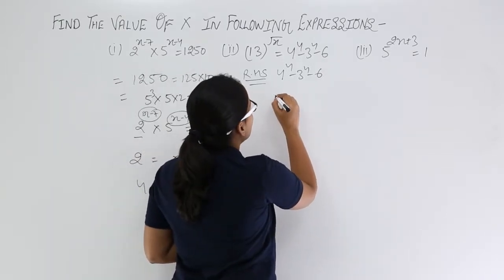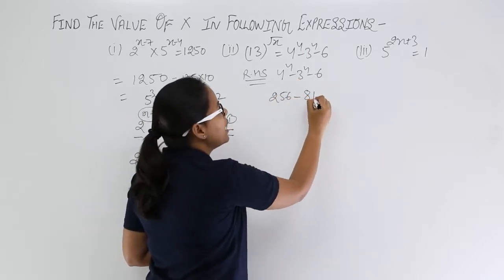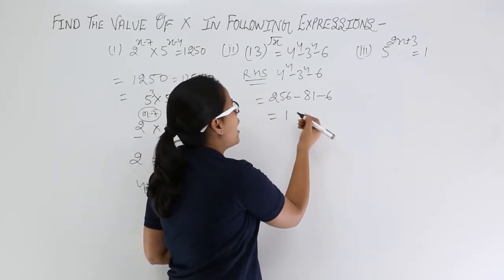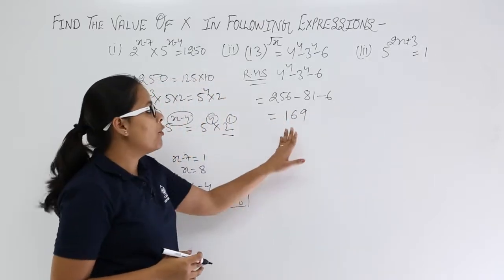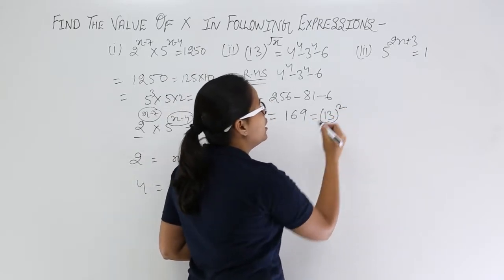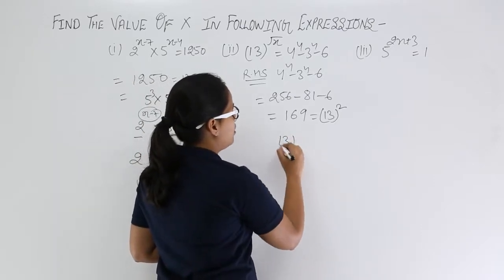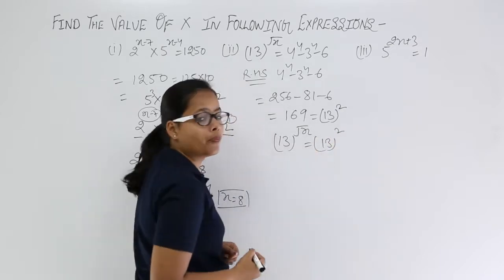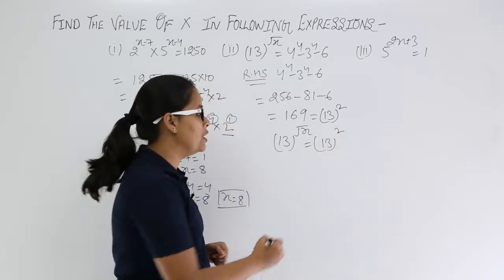What is the value of 4 raised to power 4? Solving this: 64 × 4 = 256, minus 81 (which is 3 to the power 4), minus 6. After performing subtraction and addition, you get 169. And 169 can be written as the square of 13. Now compare both sides.